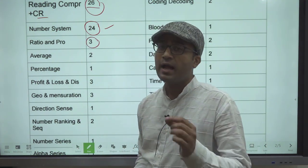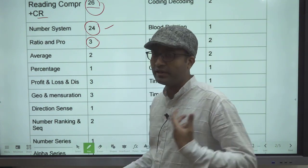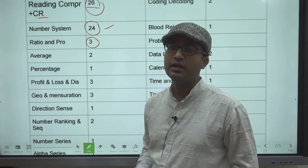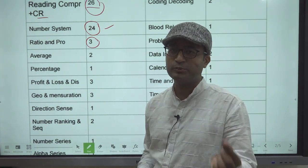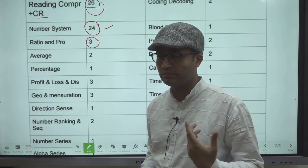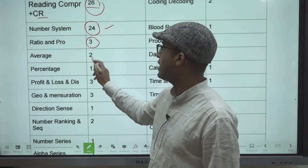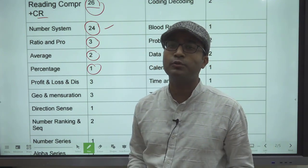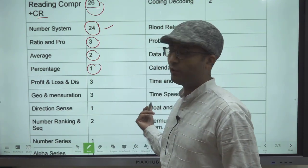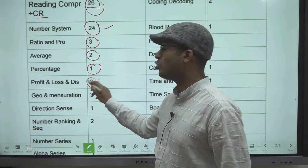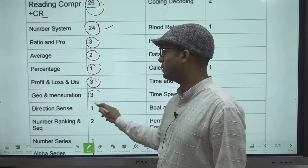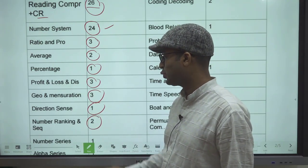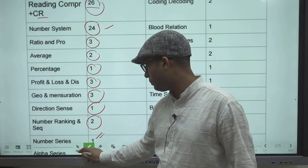Ratio and Proportion had 3 questions - I categorized these based on my knowledge. There are some questions where one statement is Ratio and Proportion, one statement is Percentage, but I tried my best. Average had 2 questions, Percentage 1 question. Profit and Loss where percentage is used, I've taken in Profit and Loss - 3 questions. Geometry and Mensuration 3 questions, Directions 1 question, Number Ranking and Sequence 2 questions, Number Series 1 question, Alphabet Series 1 question.